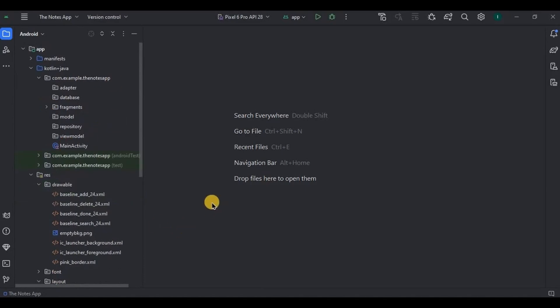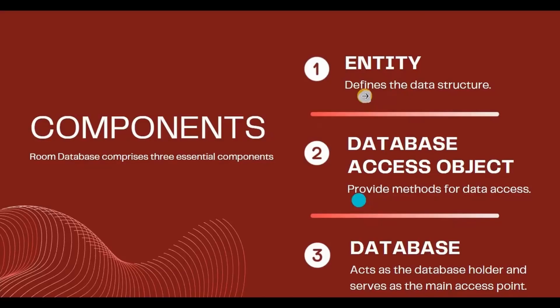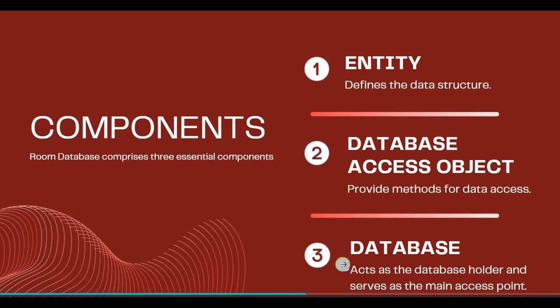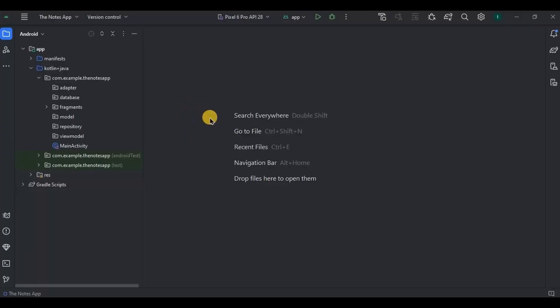As you know, Room Database has three components: Entity, DAO, and Database. Entity represents a table with its columns. DAO provides queries for data access. And Database serves as the main access point. We will create classes for all three of them.